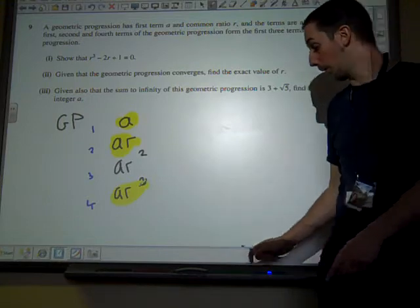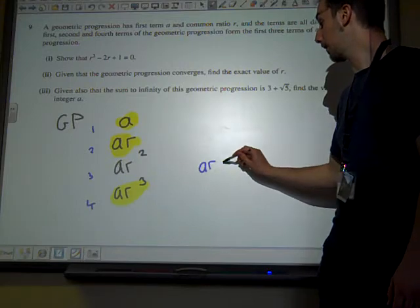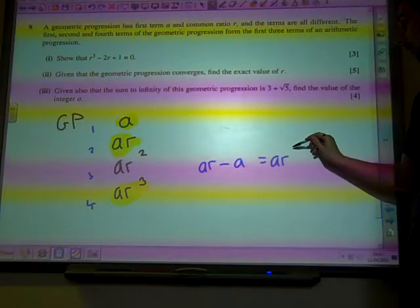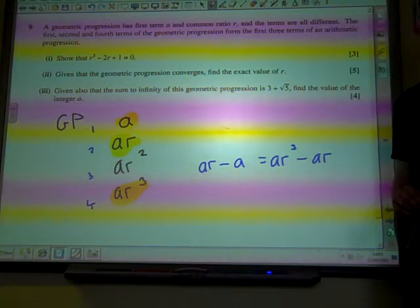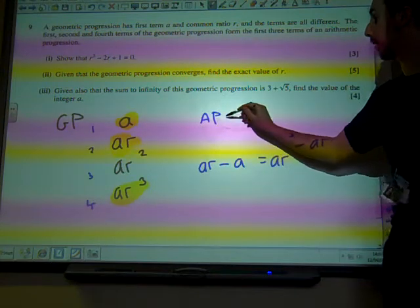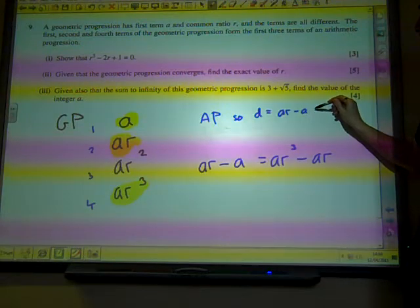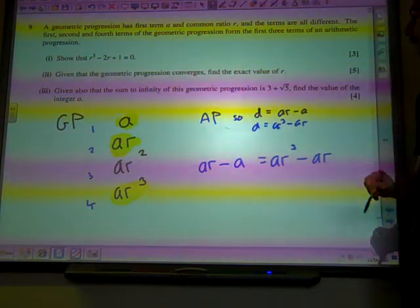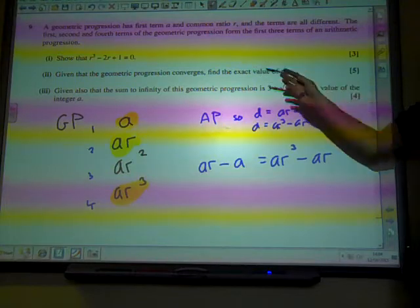In other words, what we've just been told is that the difference between the second and first term must be the same as the difference between the fourth and second term. Is that okay? That's an arithmetic progression. So, D equals AR minus A, and D equals AR cubed minus AR. That's what we get from the information on the question. Now, hopefully this will just simplify to give us that line there.